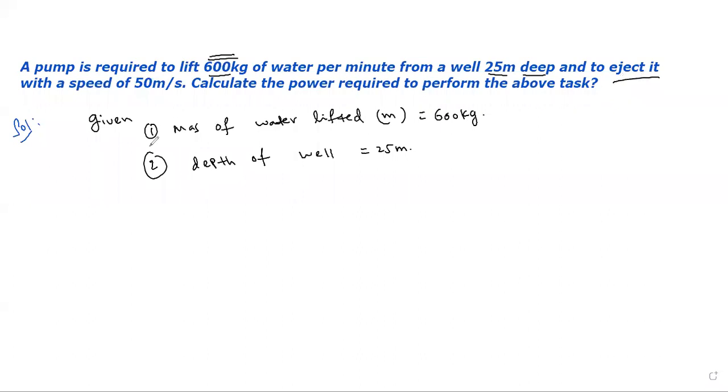To eject it with a speed of 50 meters per second. The water speed to be ejected is 50 meters per second. So, what are the given points we need? Mass of water lifted: 600 kg. Depth of well: 25 meters. Speed to be ejected: 50 meters per second.